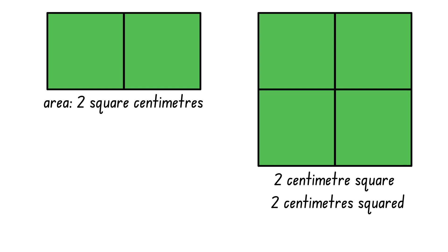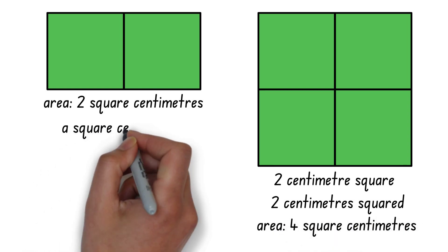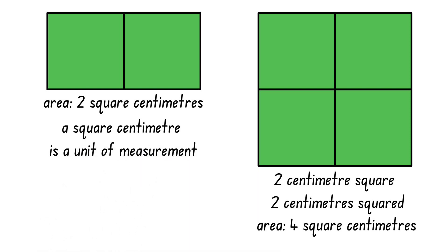This model is two centimetres squared which means it is a square with dimensions of two centimetres and it has an area of four square centimetres. A square centimetre is a unit of measurement for area while a centimetre squared is a description of a shape.